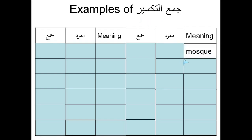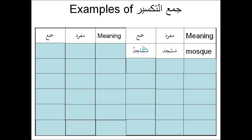So let's take the word mosque. The Mufrad, or the singular, is Masjid. The Jam', or the plural, is Masajid. If you look at this, it ends with a single Dhamma on the Daal, the final letter. Whenever you see that in an Arabic dictionary, that means the word is Mamnu' min as-Sarf.